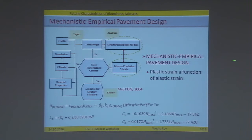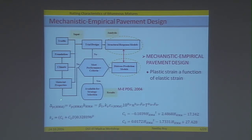In mechanistic empirical pavement design, elastic strain analysis is carried out but plastic strain is mentioned as a function of elastic strain. What is important is that you consider the deformations of every layer including the HMA layer. The expression for deformations in the HMA layer is a function of site-specific values as well as material parameters.